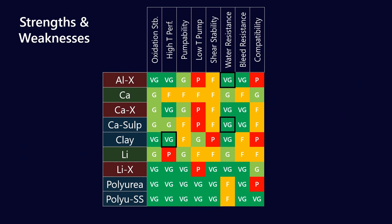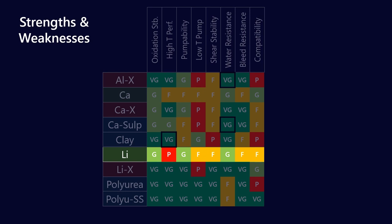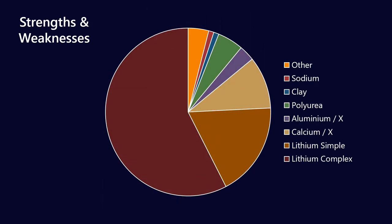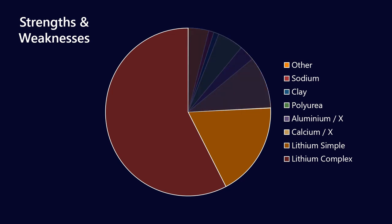If we look at a table of strengths and weaknesses, we can see that simple lithium greases perform relatively well across the board. They're pretty favorable compared with another simple soap, like calcium soap. This is reflected in global manufacturing trends. If you take a survey from the NLGI and split it up in a pie chart, lithium simple and lithium complex soaps make up almost 75% of all greases used in the world today.